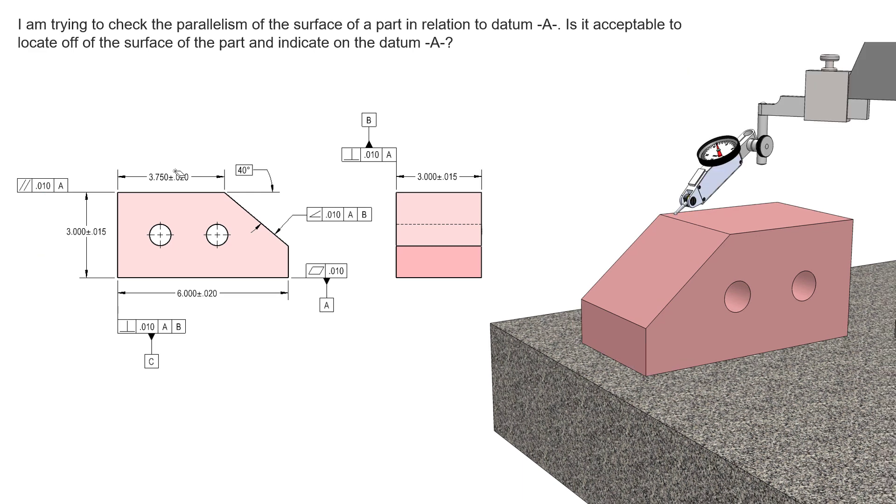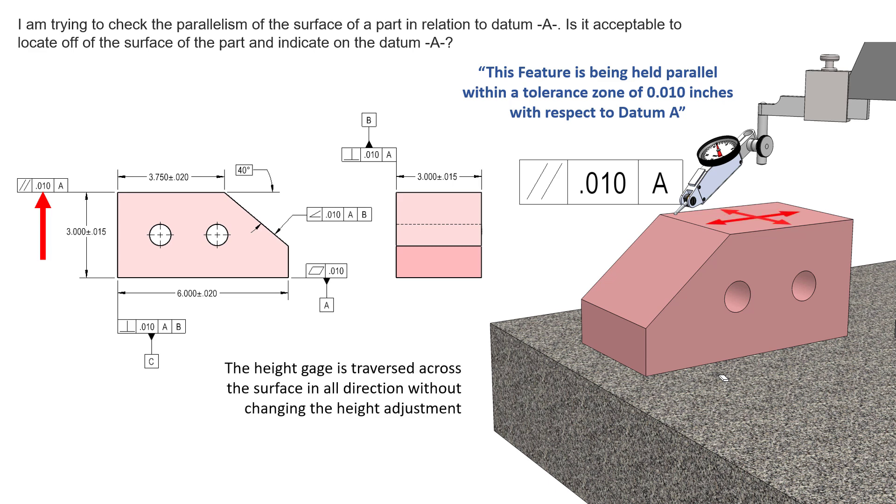So we'll go ahead and indicate. We'll simulate datum feature A by setting the part in question on the datum feature A simulating a flat planar datum. And then we go ahead and indicate off of this surface here. And we drag that indicator across that surface in all directions. And the total indicated reading across that entire surface is going to be our parallelism error.